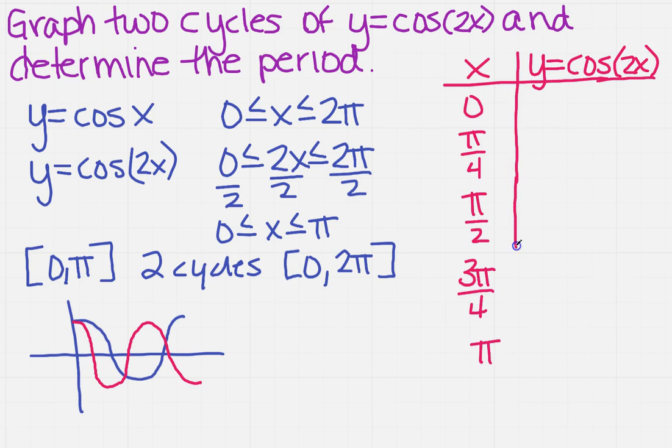Now, that only gets me one cycle, right? So we're actually going to have to double that for two cycles. So if I plug these in, you should get 1, 0, negative 1, 0.